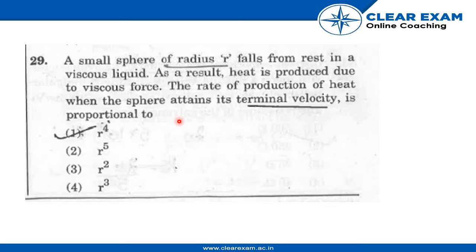We will also use the formula of rate of production of heat which would be equal to power, which then would be equal to f vt, which would finally be equal to 6 pi nu r v square.